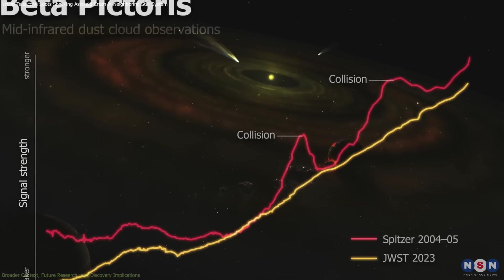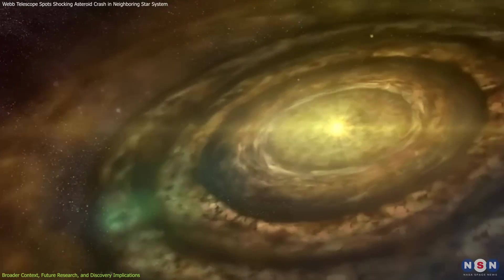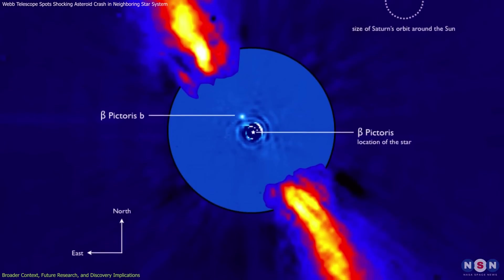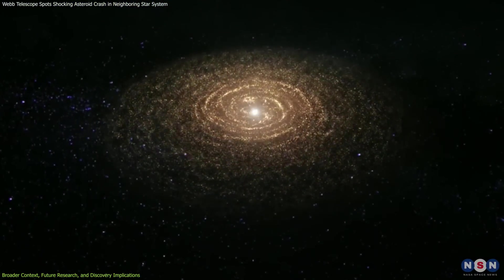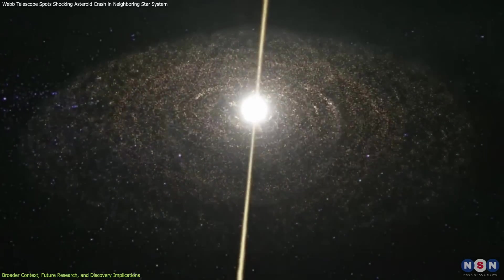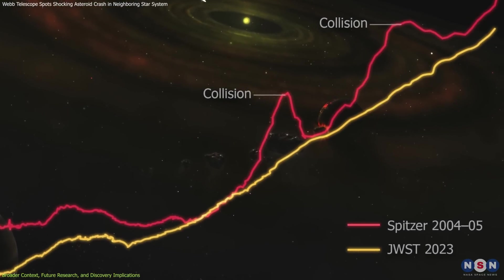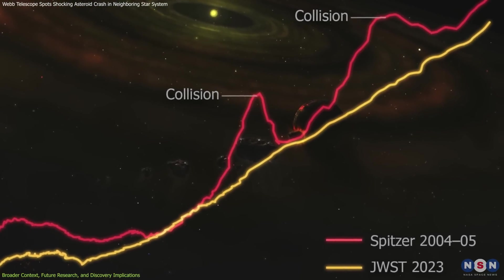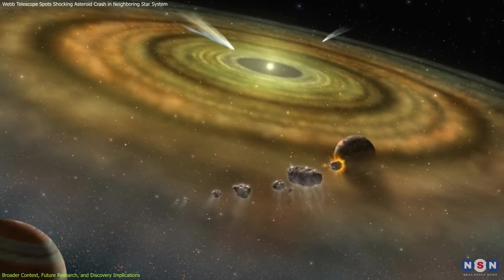The recent observations by Webb challenged the previous assumptions about dust replenishment in young star systems like Beta Pictoris. Scientists initially believed that small body collisions would continuously stir and replenish the dust around these young stars. However, the evidence from Webb indicates that the dust has not been replaced as expected, suggesting a more sporadic and cataclysmic replenishment process.